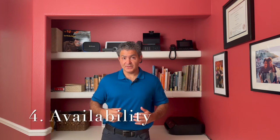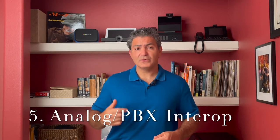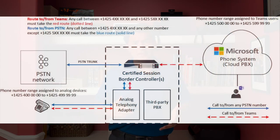The fourth reason is availability. Calling plans today are available in 28 countries and that list is growing, but in all the countries where we don't have calling plans, direct routing can help fill in the gap. Direct routing works with telco providers that are available all around the world. So if you're working with a telco provider in Dubai or in South Africa and we don't have calling plan services there, that might be a good reason to pick direct routing. And the fifth reason is if you have a lot of analog phones, paging systems, and fax machines you want to connect to Microsoft Teams, or a PBX you want to interoperate with Teams, direct routing or SBCs is the way to do it.